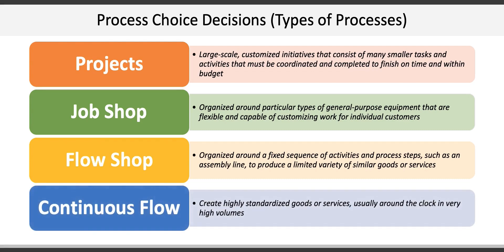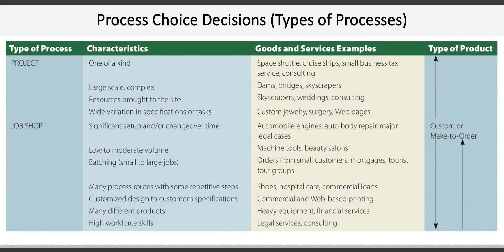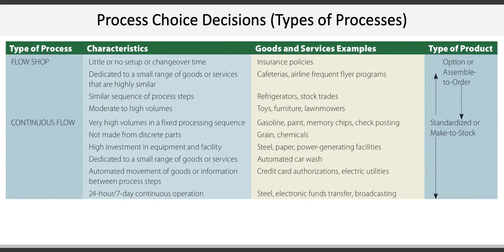The last is a continuous flow process designed for highly standardized goods and services, usually around the clock and in very high volumes. Examples could include oil refineries or credit card authorization services. This chart included in the chapter outlines the key characteristics for each process type along with a number of different examples. You should take the time to familiarize yourself with it so that you can understand the differences between them.